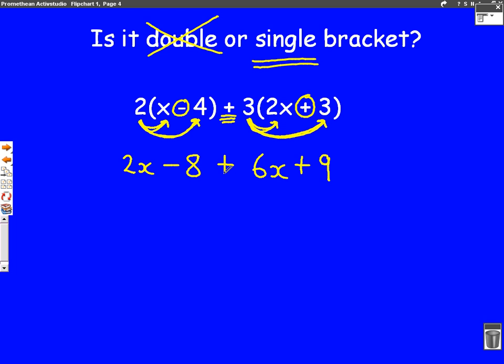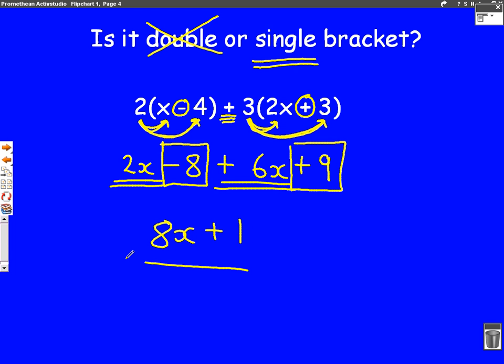Then our second mark is for making it simpler. Well, we can see here we have 2x and we have 6x. So we're trying to get all the x's together. So 2x and 6x will give us 8x. Now we look at the numbers. We've got minus 8, add 9, which gives plus 1, which would give us our second mark. So I wanted to show you that one so that you understood that sometimes you can get a single bracket twice in the same question.